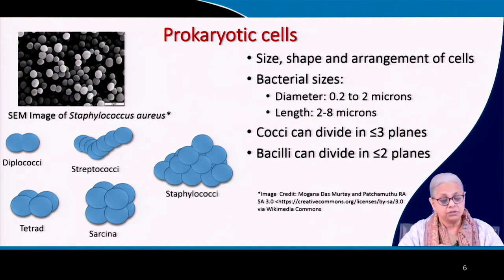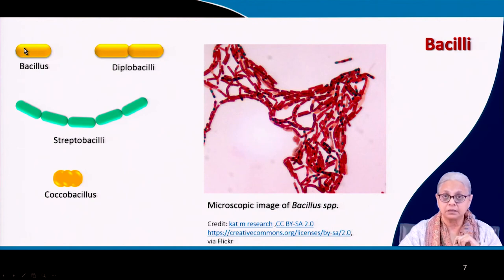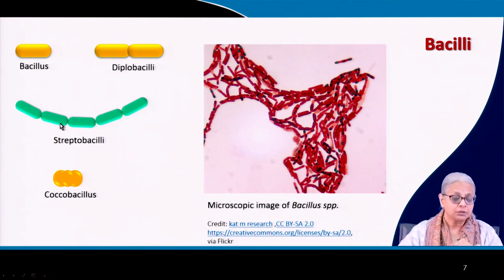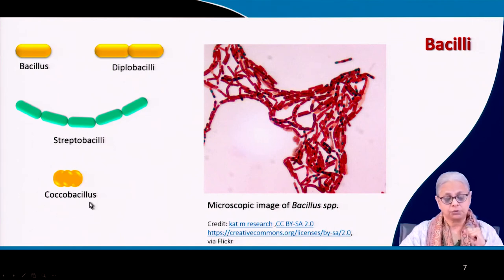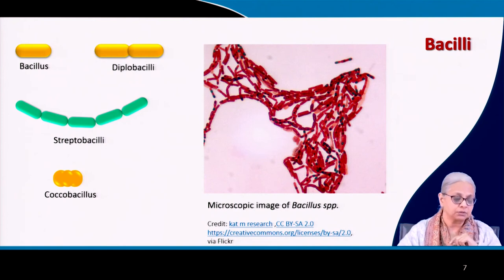Bacilli are rod-shaped bacteria. A single bacillus dividing in one direction produces diplobacilli. If it continues dividing in the same direction forming a long chain or filament, you get streptobacilli — the same nomenclature as for cocci. Coxobacilli are slightly different: they are not so elongated but more spherical or slightly oblong, almost like an egg shape.